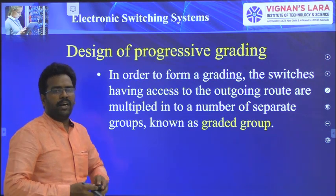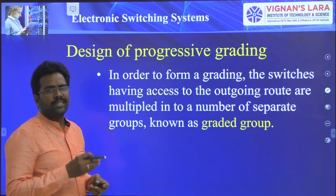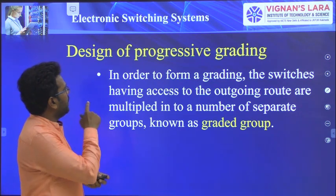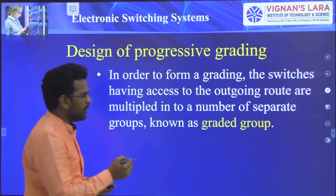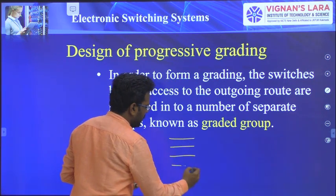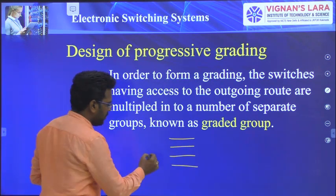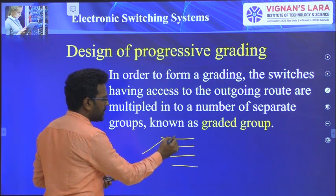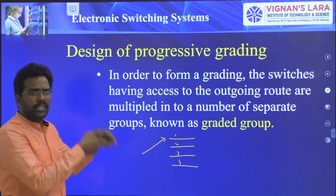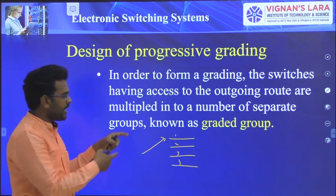Grading can be done in different ways: progressive grading, skipped grading, and homogeneous grading. In progressive grading, the selector switch is going to choose the outlets in sequence order — first, second, third, and so on. We are choosing the outlets in order, hence it is called progressive grading.